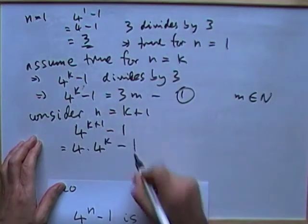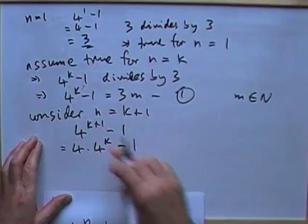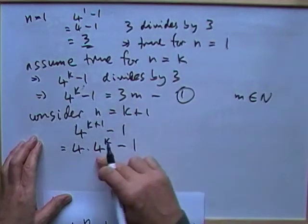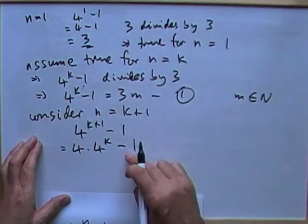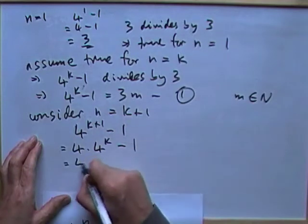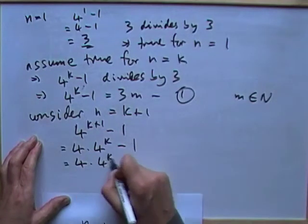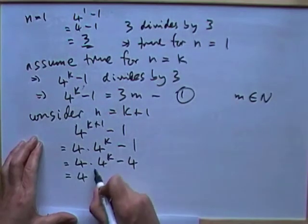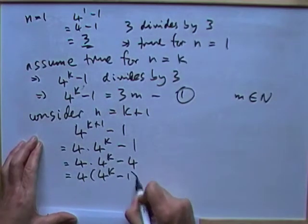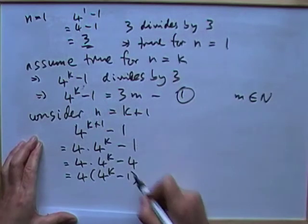So take one of the factors of 4 out. So that's 4 times 4 to the k minus 1. That's almost what I want to make a 3m. 4k minus 1. But that's got 4 tagged onto it. So put a 4 onto this one as well then. If I change that into 4 times 4 to the k minus 4, then I would have 4 times 4 to the k minus 1. But I can just change that to a 4.